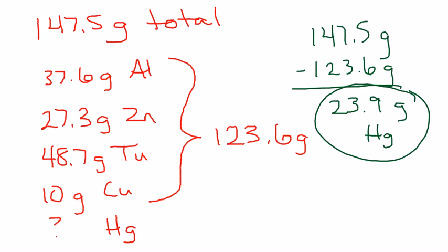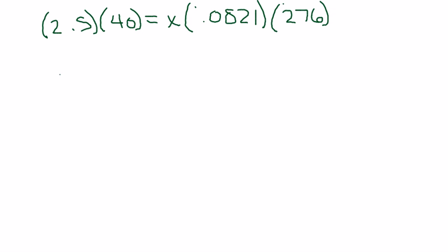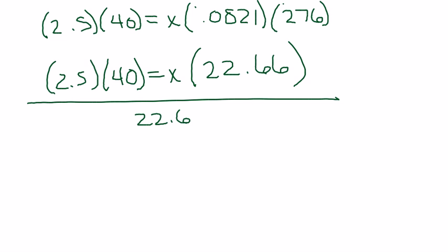Number three is just an algebra problem. We have 2.5 times 40 equals x times 0.0821 times 276. To solve this, all we're going to do is multiply these two numbers on the right together first. So we'll have still 2.5 times 40 equals x times 0.0821 times 276 equals 22.66. We'll round that to a 6 for right now. Our next step is to go ahead and divide everything by 22.66.